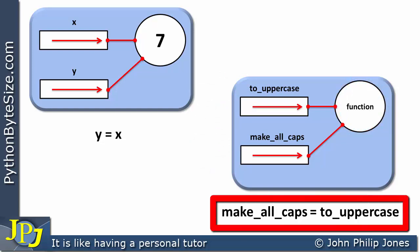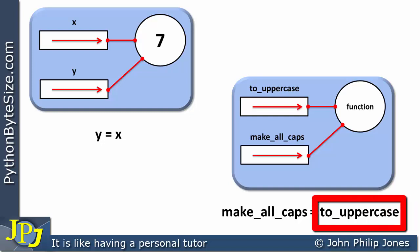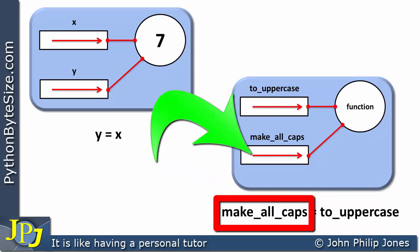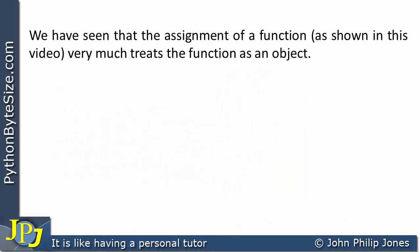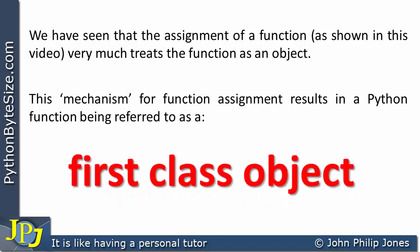I'd like to point out that in this area I haven't put any brackets. If I were to put brackets here, Python would think you were trying to invoke the actual function. Without the brackets, it takes the object reference — this arrow — and assigns it to this name. We have seen that the assignment of a function, as shown in this video, very much treats the function as an object. The mechanism for function assignment results in a Python function being referred to as a first-class object.